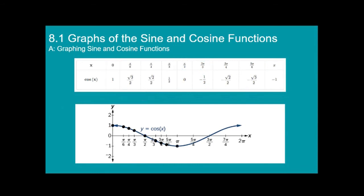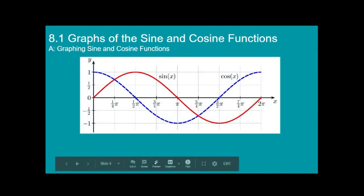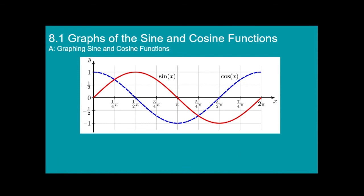On your assignment the other day, I asked you to graph them together on the same plane, and you should have gotten something like this. We have the sine in red and the cosine in blue, and you can see that they are actually the same graph, but just shifted horizontally. If we took the cosine graph and moved it over by pi over two, it would line up with the sine wave. Sine starts at zero — in the middle of the wave — but cosine starts at one, at the top of the wave.